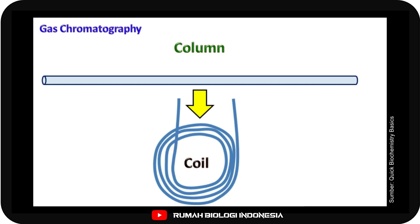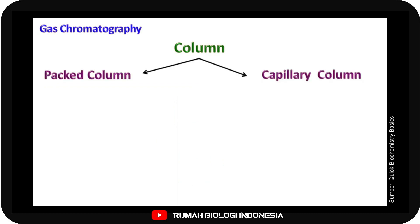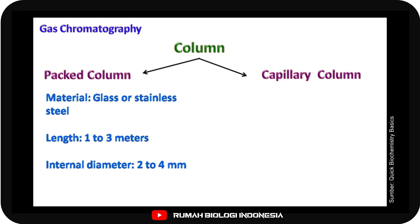The column used in gas chromatography is very long and arranged in a coil. The column used in gas chromatography are of two types: number one, packed column and number two, capillary column.